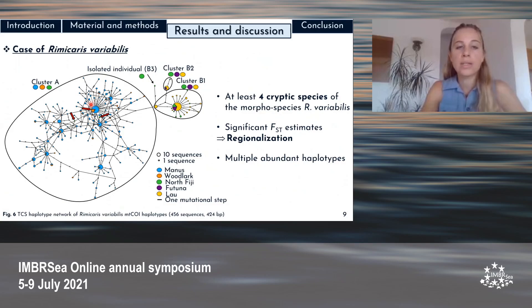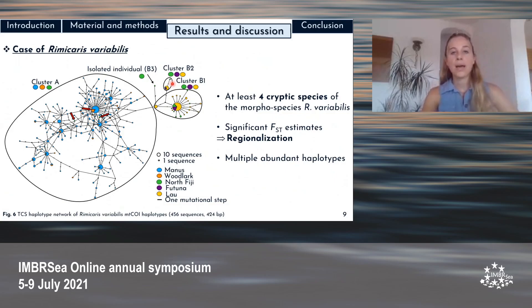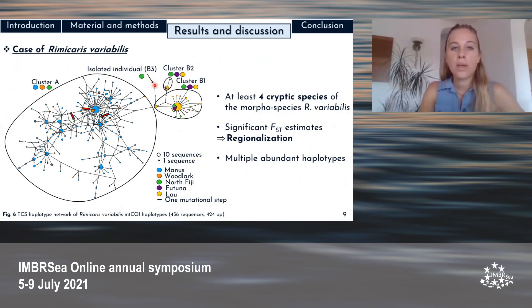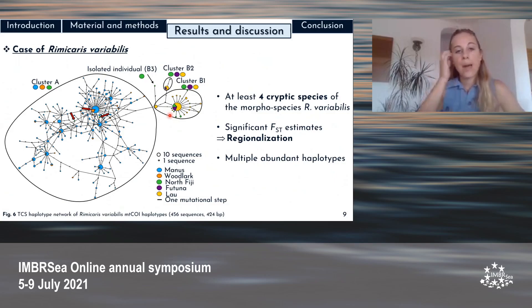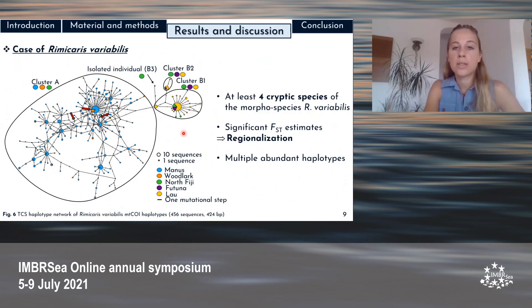Cluster A comprised sequences originating from Manus, Woodlark, and North Fiji basins. Three sequences from North Fiji were observed in cluster A, while the remaining ones belonged to clusters B1, B2, and B3. Clusters B1 and B2 had sequences originating from North Fiji and Lau Basins as well as the Futuna volcanic arc. An isolated individual named B3 was observed in North Fiji. The pairwise FST estimates were significant, confirming regionalization as observed with the clusters. The haplotype networks show multiple abundant haplotypes, revealing the existence of bottleneck events, also supported by statistical tests showing bottleneck events followed by population expansion.